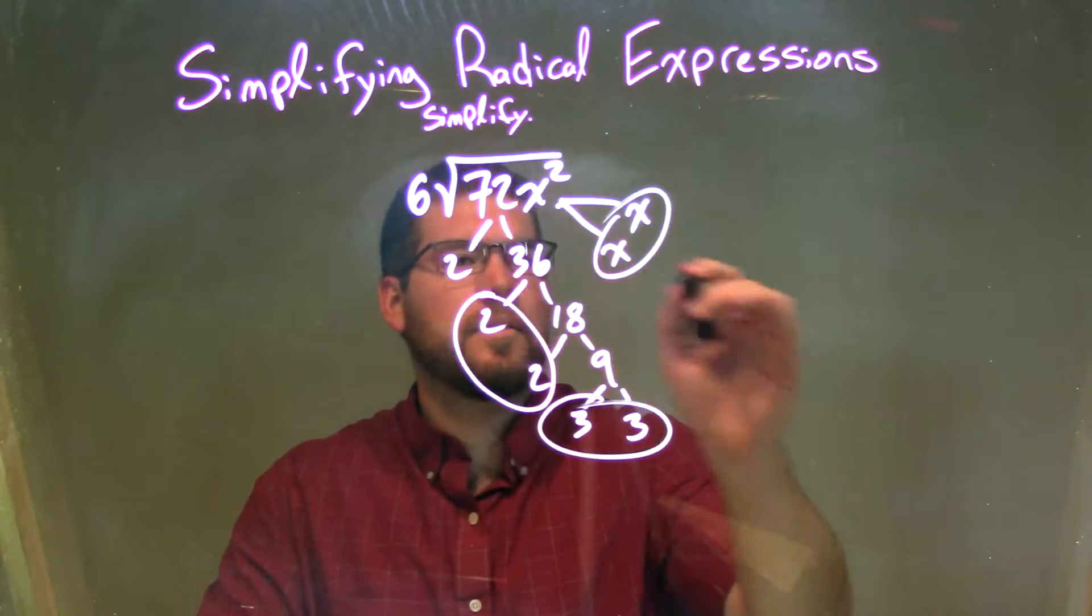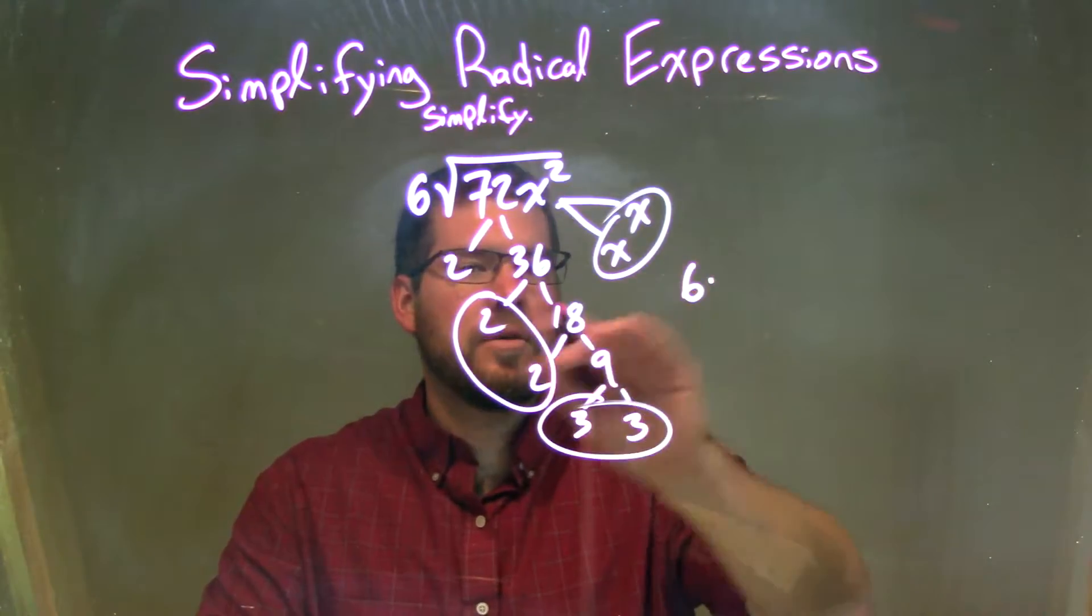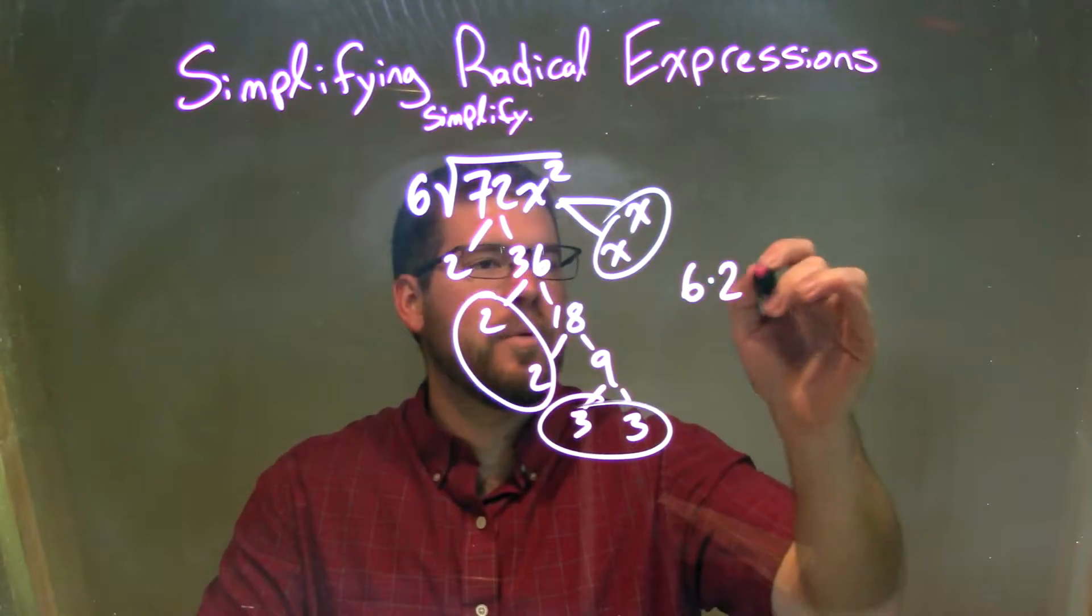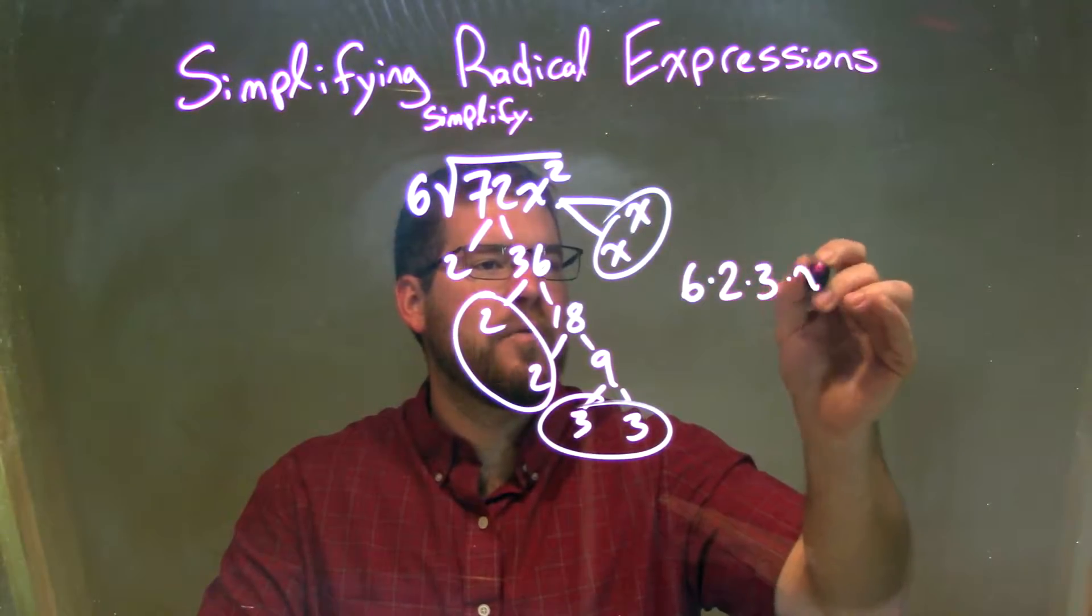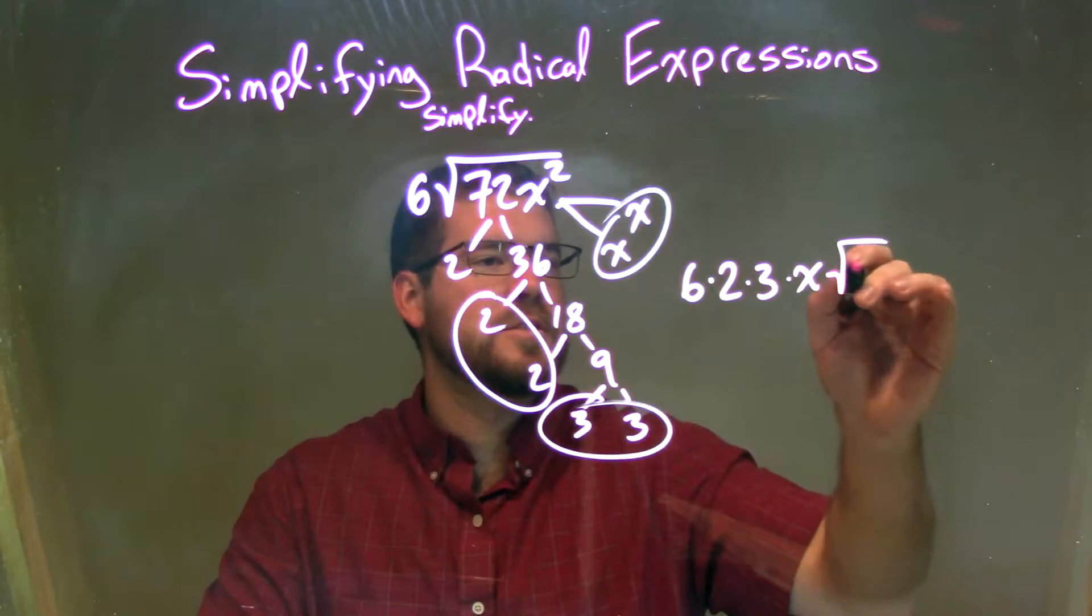So when we rewrite this, 6 stays on the outside because it's already there, and then each pair, we put a single one representing the pair on the outside. So we have one 2 there, one pair of 3s, and one pair of xs. What's left is the lone ranger by himself, inside the square root, which is the 2.